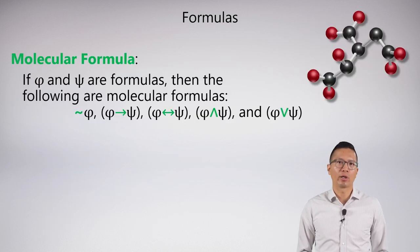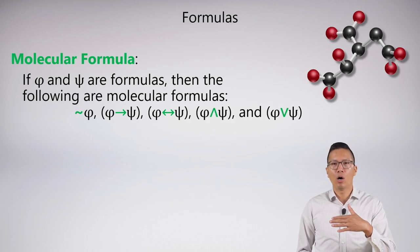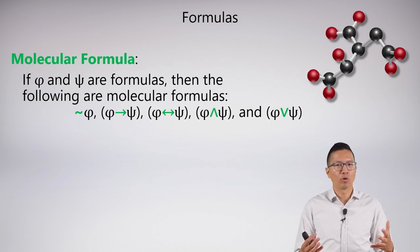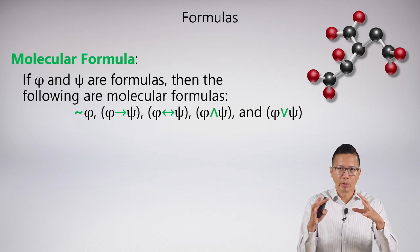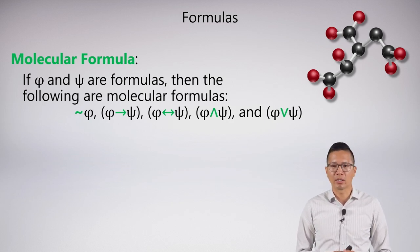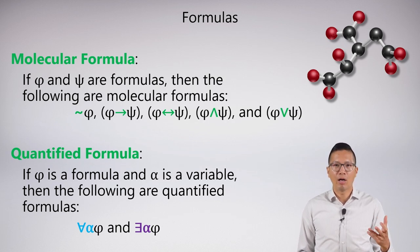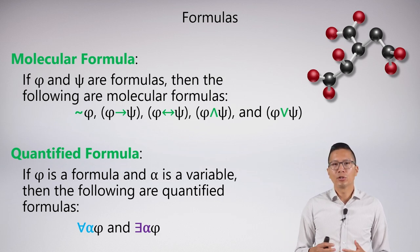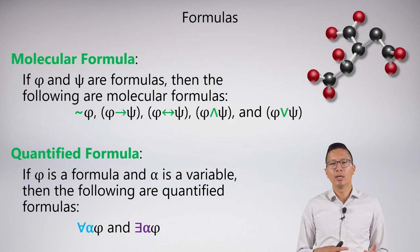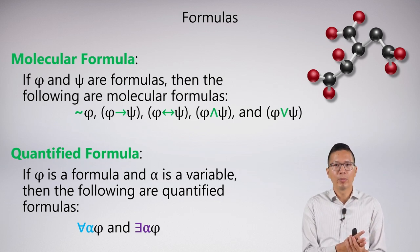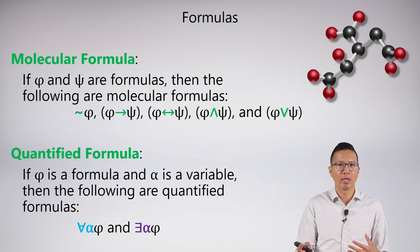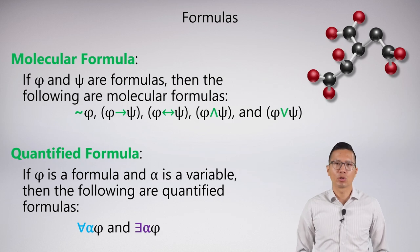From there we can build up molecular formulas. All the sentential stuff applies — we can build molecular formulas by taking atomic formulas and combining them using logical connectives. We also introduce a new kind of formula: a quantified formula. If phi is a formula and alpha is a variable, then 'for all alpha, phi' and 'there exists alpha, phi' are quantified formulas. The correct syntax for using a quantifier is it always has to be followed by a variable, and then the formula. We always need a variable after the quantifier.